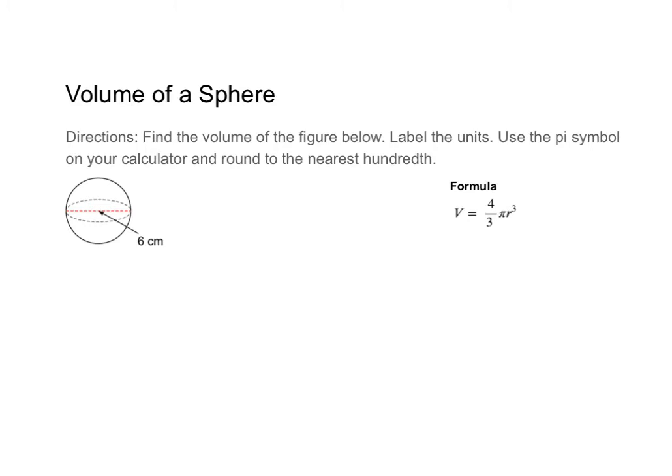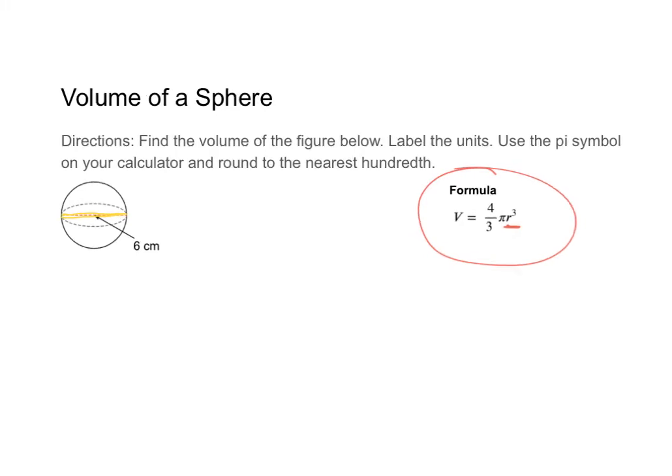So our formula has a fraction, but that's okay. All you need is the radius. The radius here—we're given the diameter because we're given a line that goes from one end to the other end of the circle. So if you're given the diameter you can just divide by two to find the radius. So radius is 3.